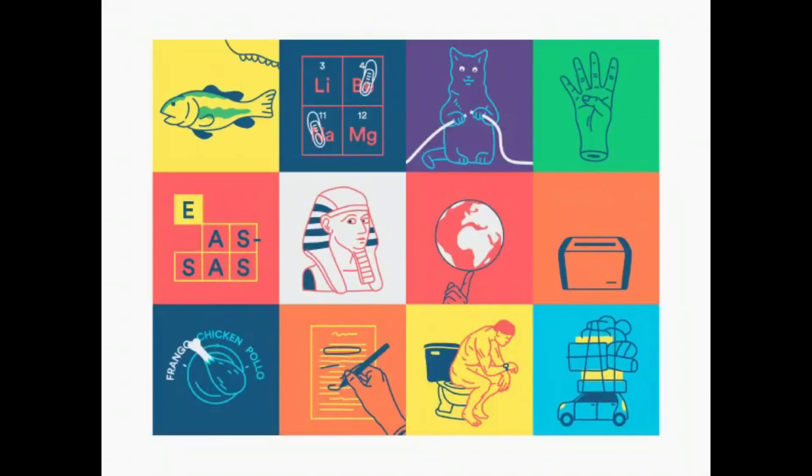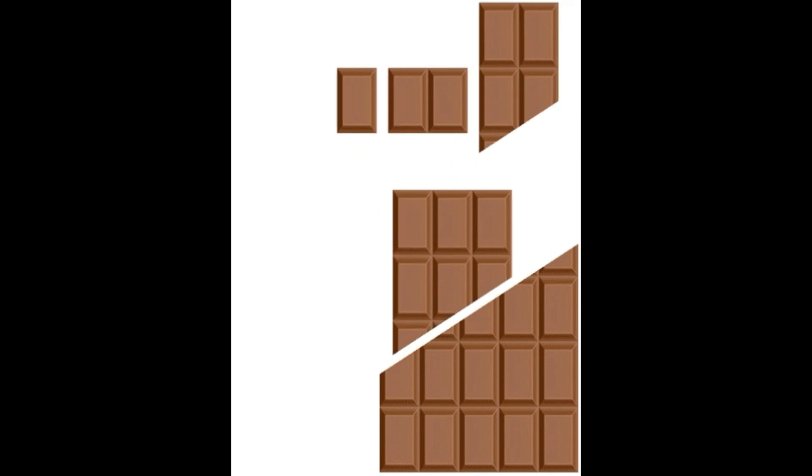In our day to day life, we come across many optical illusions. One such optical illusion that has made people scratch their heads is the infinite chocolate paradox which leaves you with an extra cube every time you rearrange it.